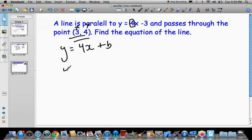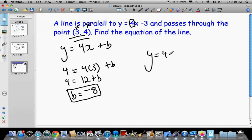So let's do that. So 4 equals 4 times 3 plus b. So 4 equals 12 plus b. Or b equals negative 8. And now that you have b equals negative 8, you have the equation of your line. y equals 4x minus 8. And that's your answer.